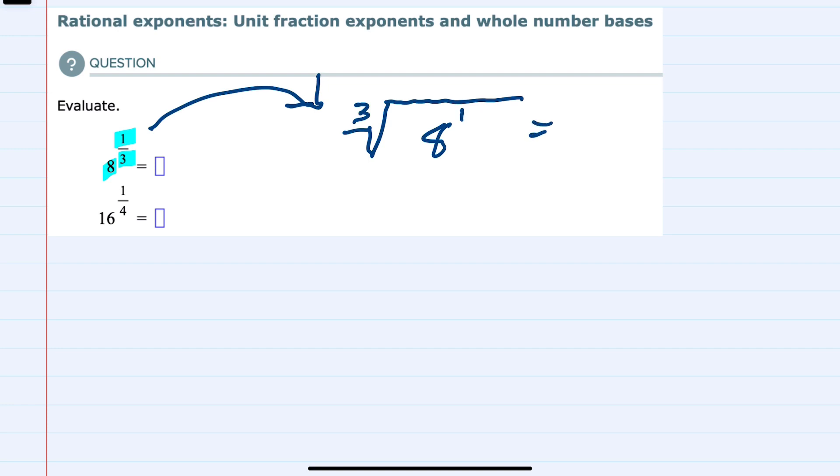So just cleaning this up, we're really looking for the third root of 8, which asks, what number could I write 3 of, multiply them, and end up with 8? And so here that would be 2 times 2 times 2 equals 8. So the third root of 8 is 2.